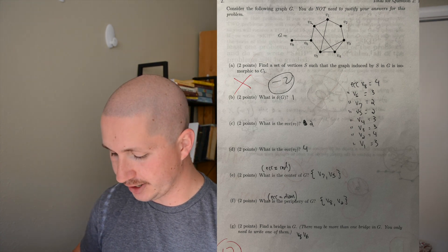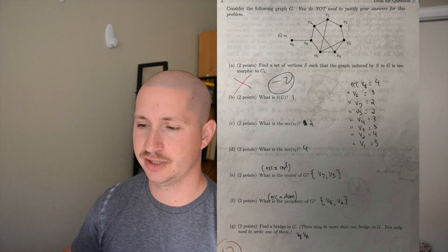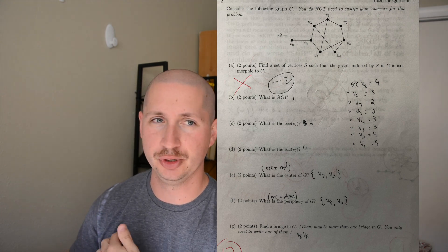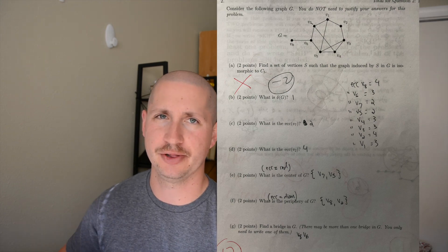Part G: find a bridge. If you know what a bridge is, that's pretty straightforward. That's just an edge which, if removed, creates a disconnected graph.